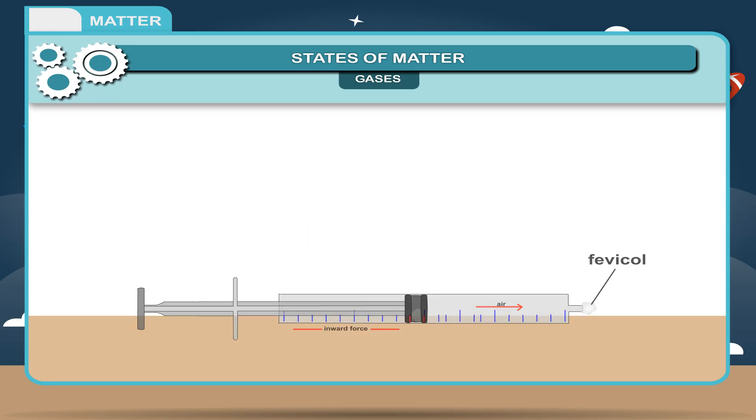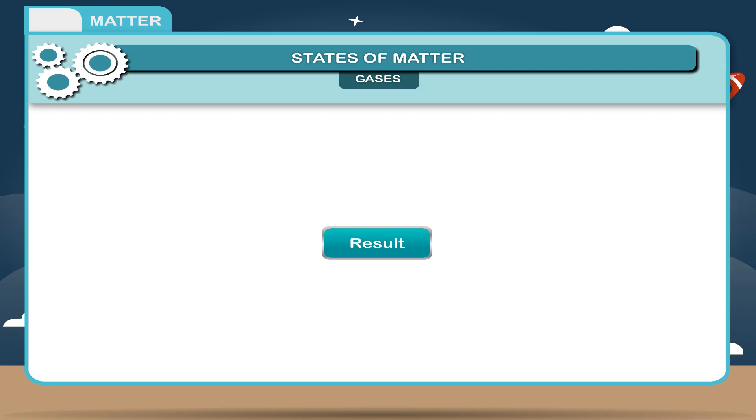Observation: The plunger moves inside the syringe on applying force. If this force is removed, then the plunger comes to the original position. Result: Gases can be compressed.